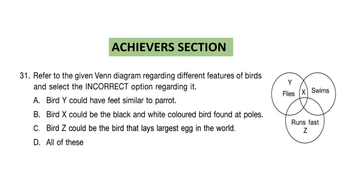Here comes the Achievers section. Question 31. Refer to the given Venn diagram regarding different features of birds and select the incorrect option. Option A: Bird Y could have feet similar to a parrot — bird Y can fly, so that's true. Option B: Bird X could be the black and white colored bird found at poles — bird X can swim and fly, but we know that penguins cannot fly, so this is incorrect. Option C: Bird Z could be the bird that lays the largest egg in the world — that's also true. So Option B is the incorrect statement.